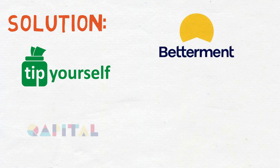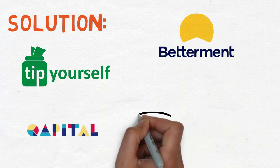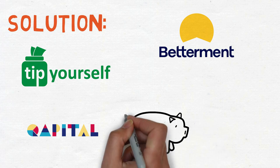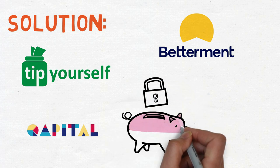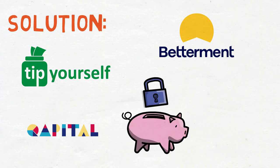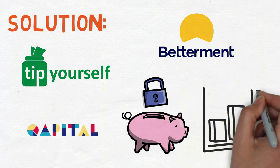Solution: Applications like Tip Yourself, Betterment, and Capital are made for consumers to temporarily conceal their financial situations from themselves. Now, if you don't immediately see that money, you won't be able to spend it, which will eventually help you improve your finance.